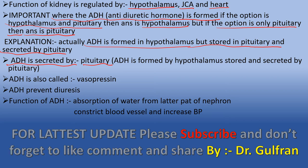The functions of ADH are: first, absorption of water from the later part of the nephron, that is DCT and collecting tubule; and second, constriction of blood vessels (hence the name vasopressin), causing an increase in blood pressure. Renin is secreted by the juxtamedullary (JG) apparatus, specifically the JG cell, and its function is to convert angiotensinogen into angiotensin 1.